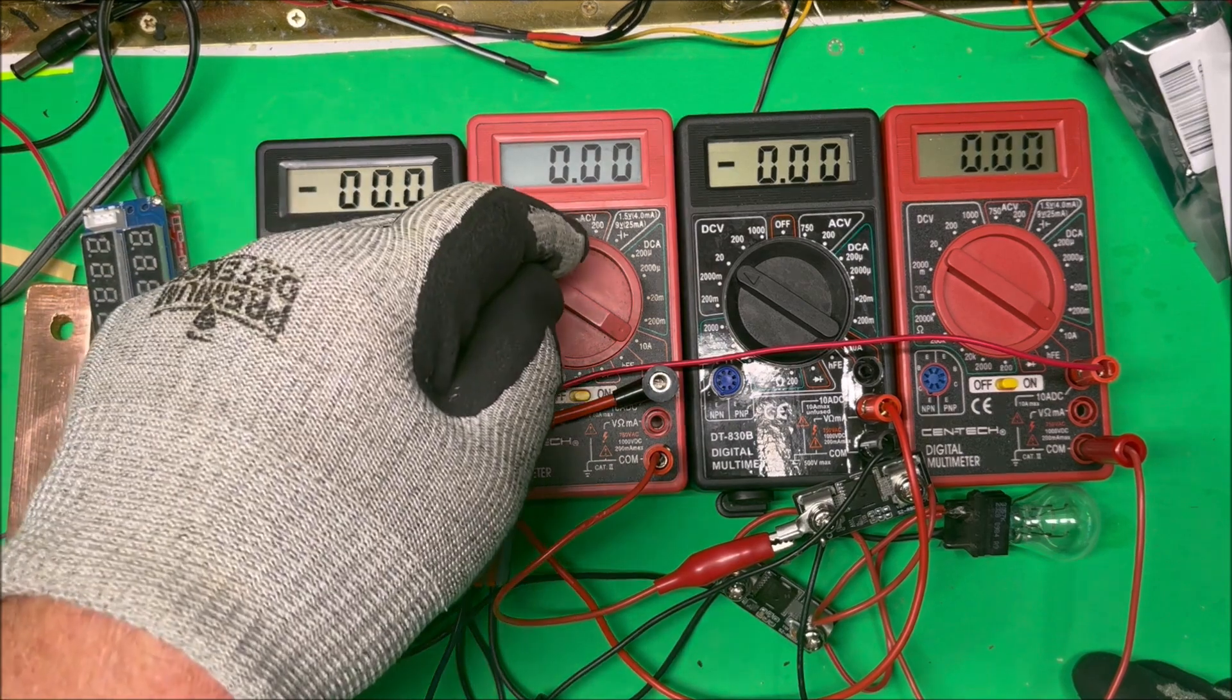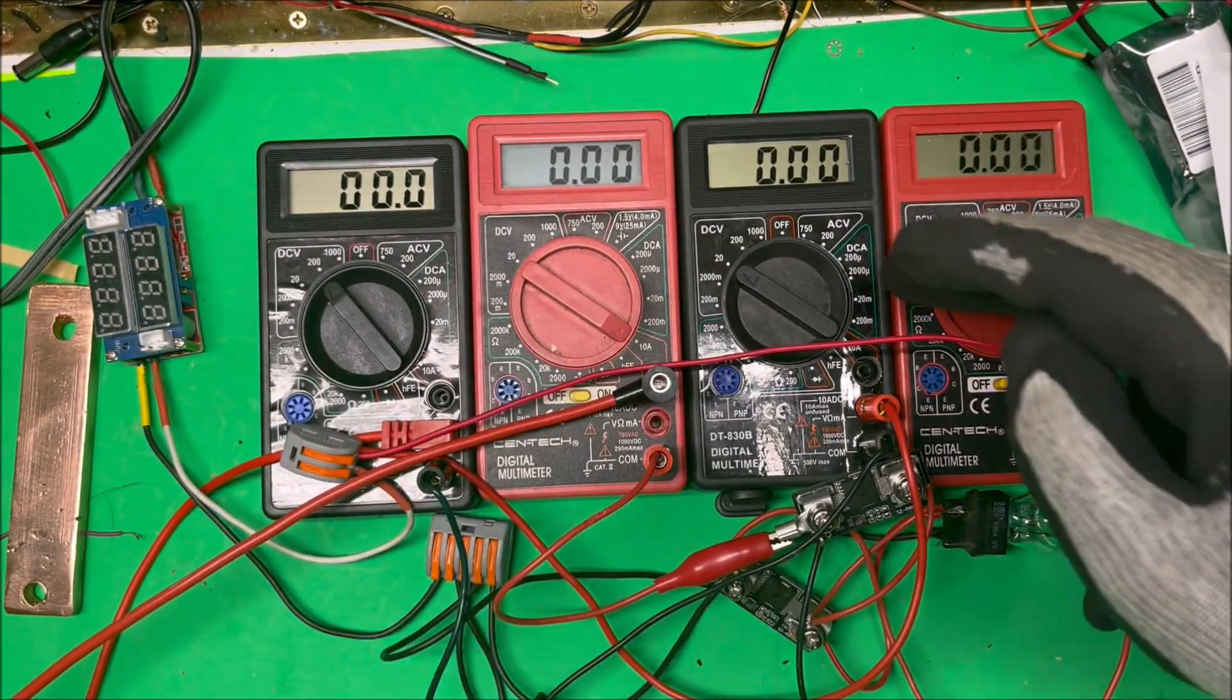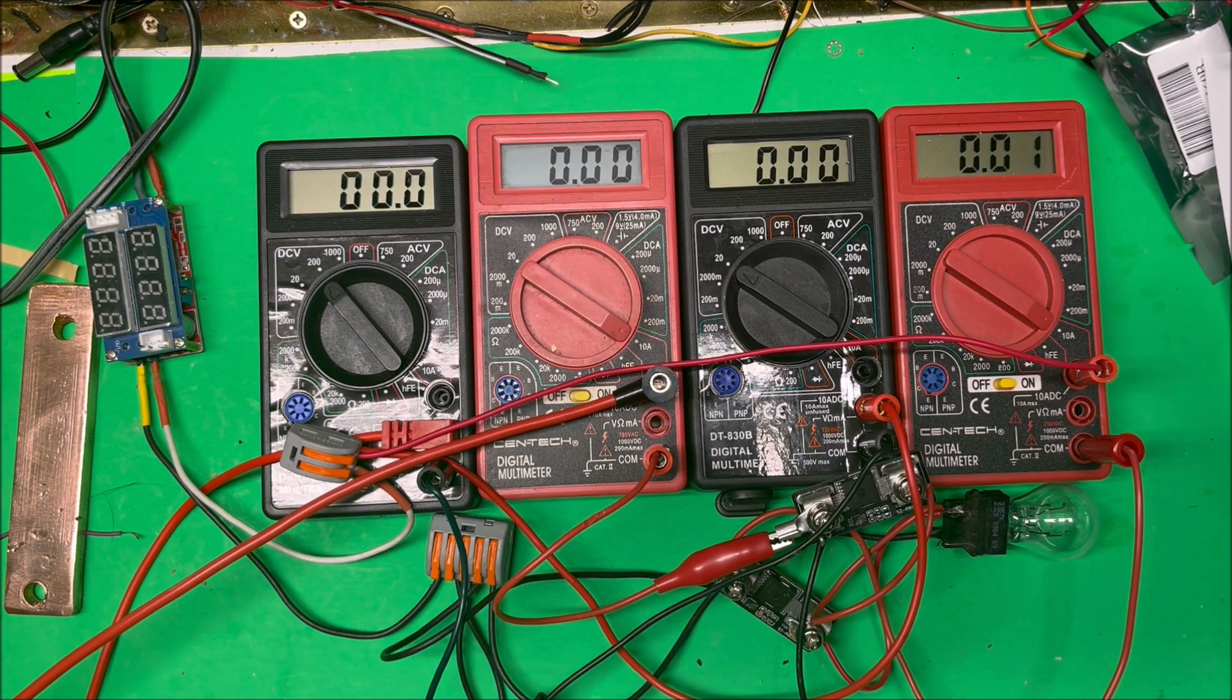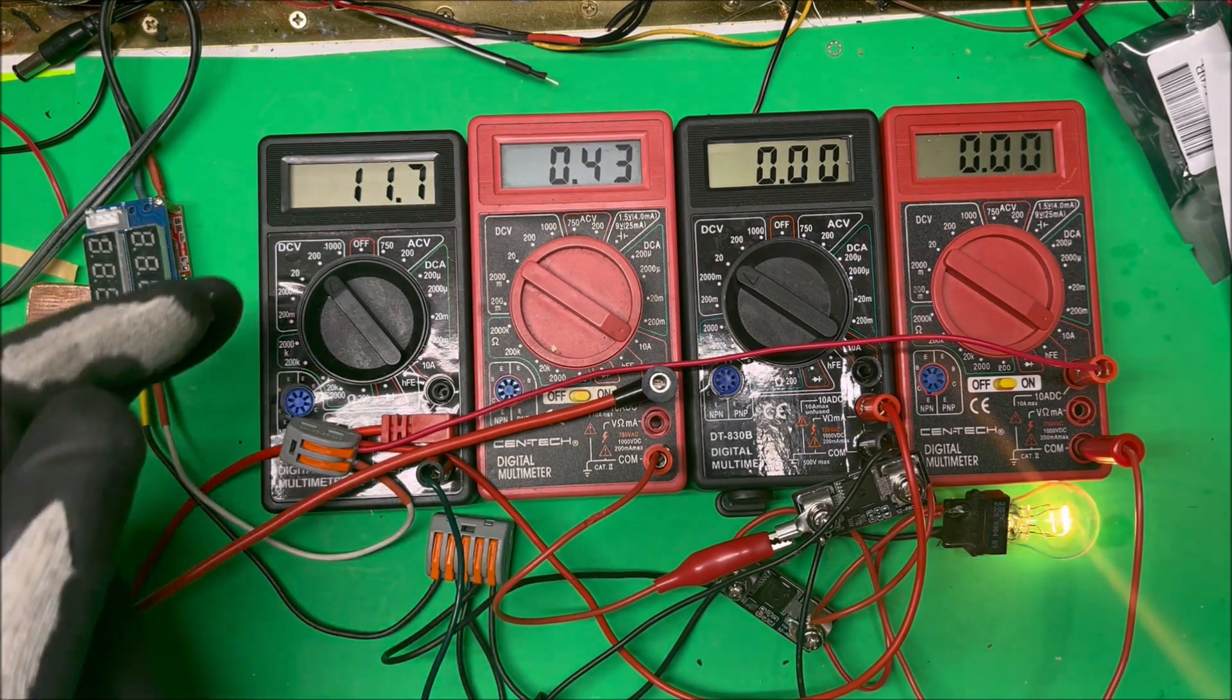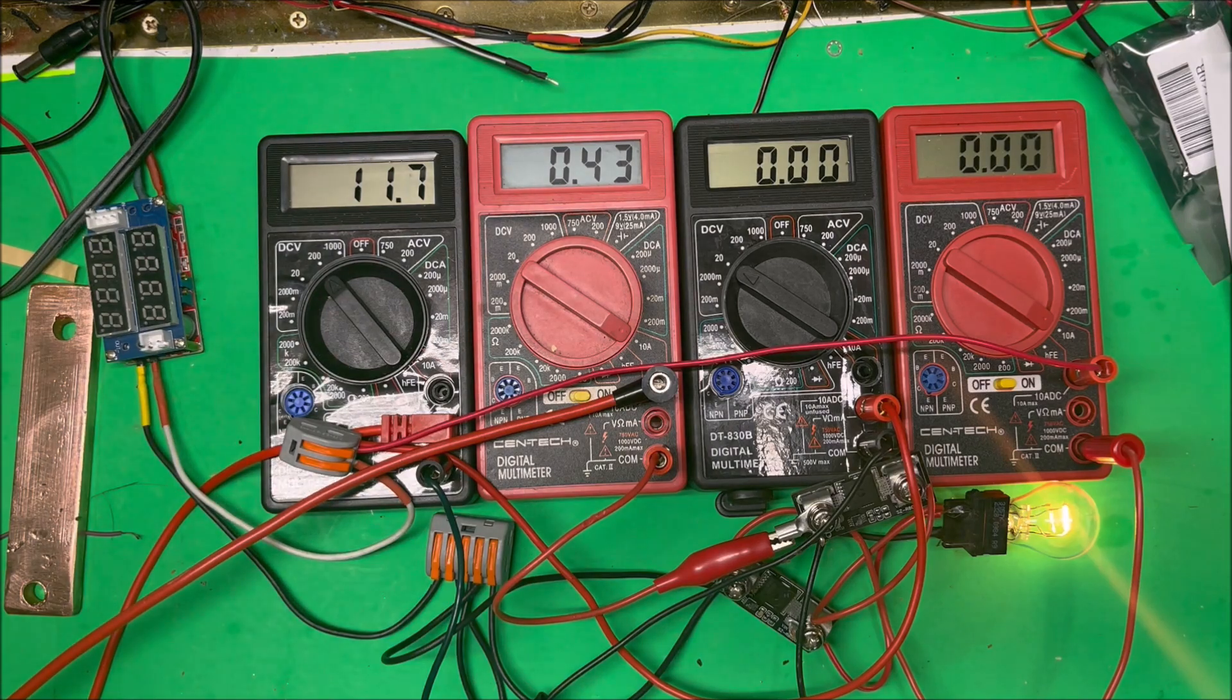This is the voltage for the first diode, current for the first diode. This is the voltage on the second diode and current for the second diode. We're going to turn the first one on and put that up to 12 volts.